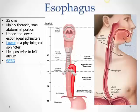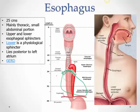The esophagus lies just posterior to the left atrium of the heart. If the left atrium is enlarged, it would press on the esophagus and cause difficulty swallowing. So patients presenting with difficulty swallowing should also be evaluated for cardiac problems, especially left atrial enlargement.